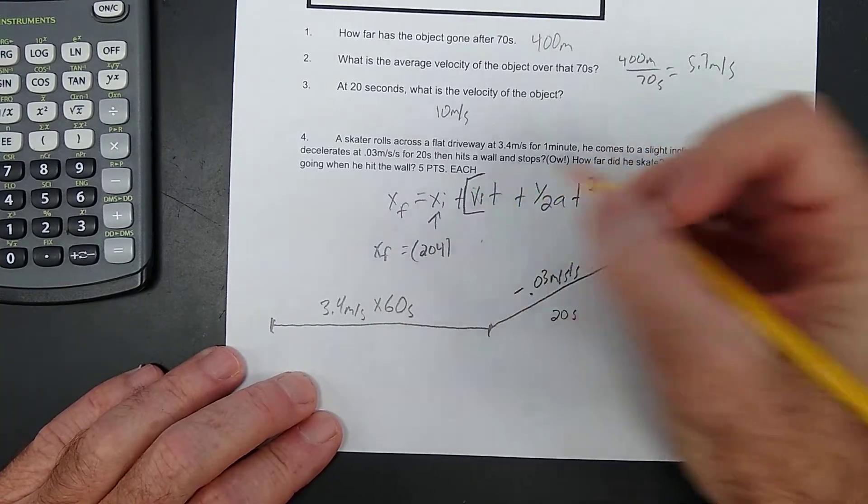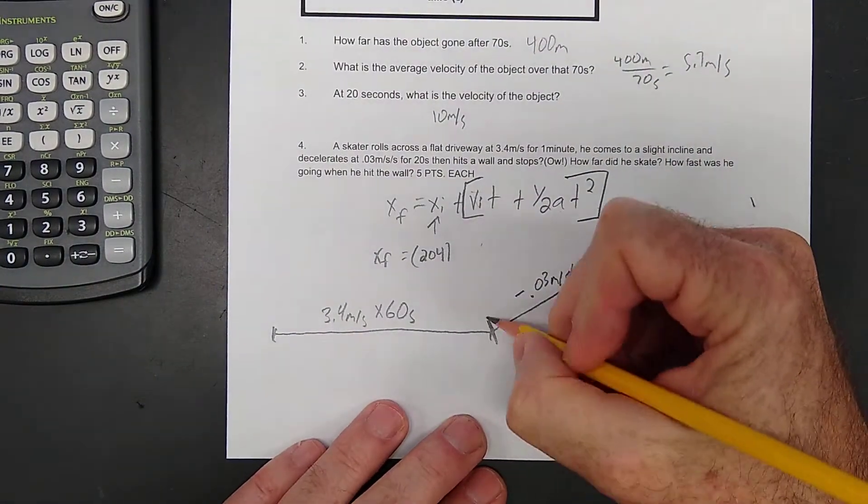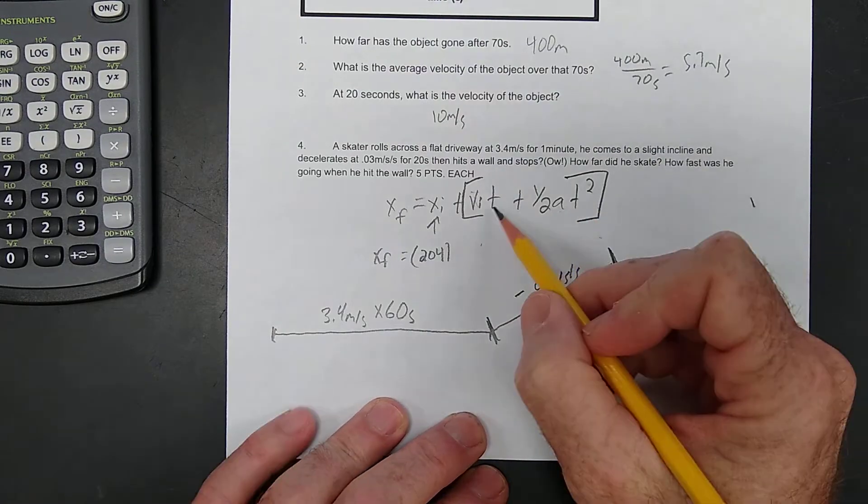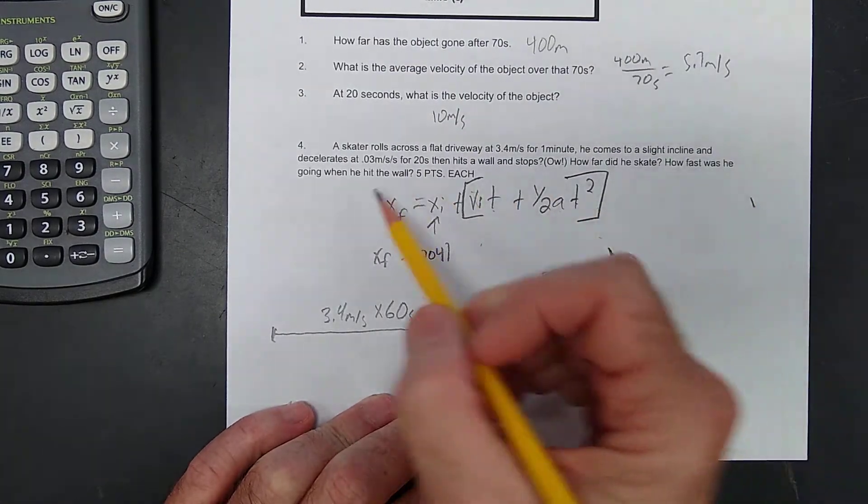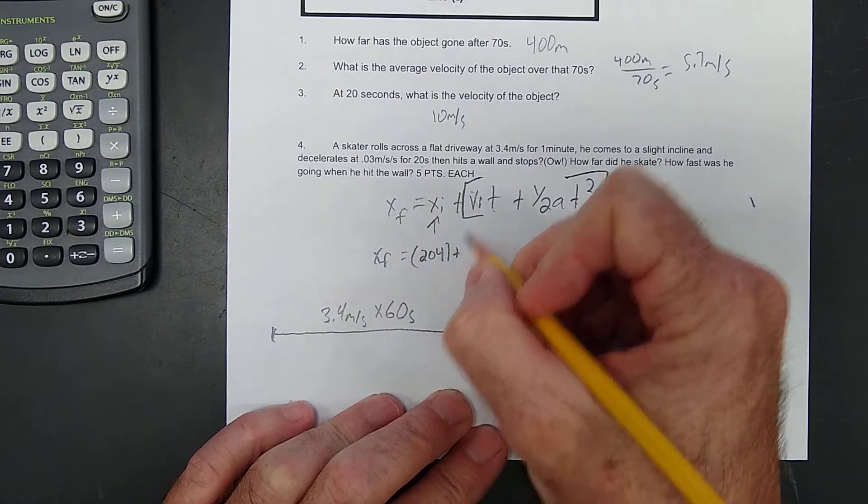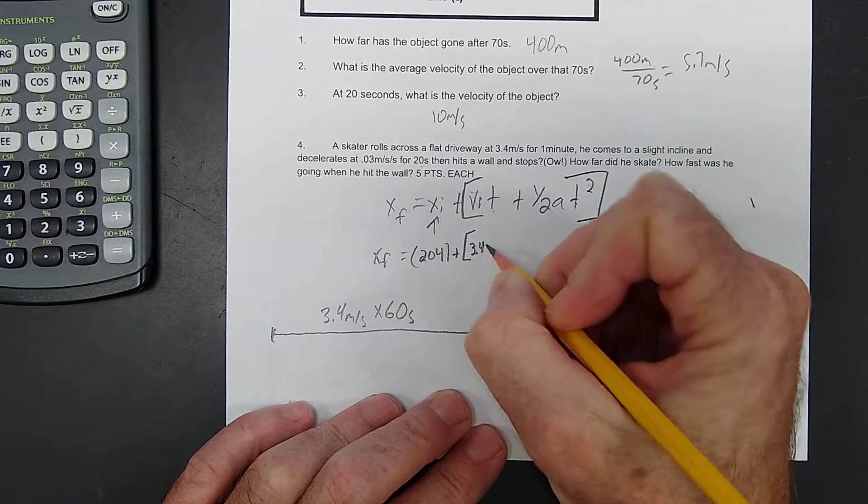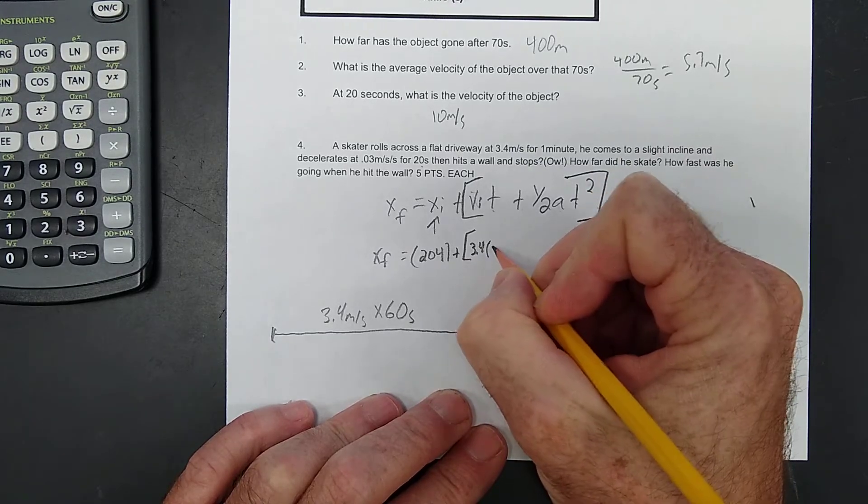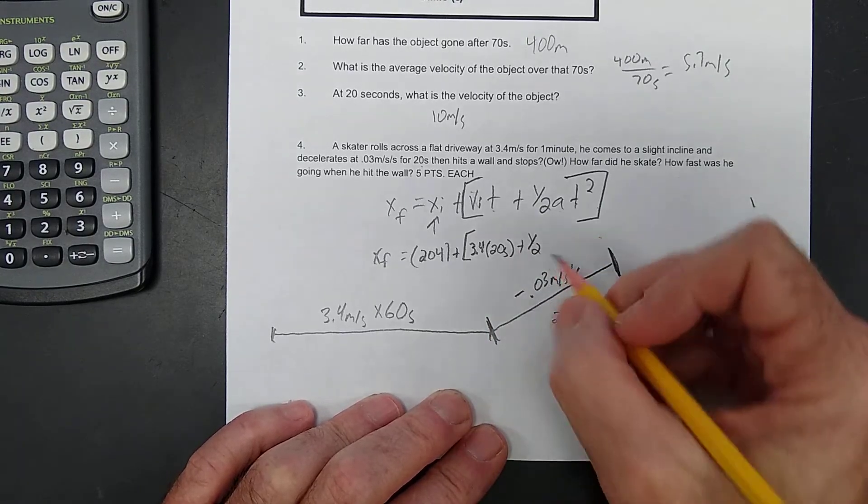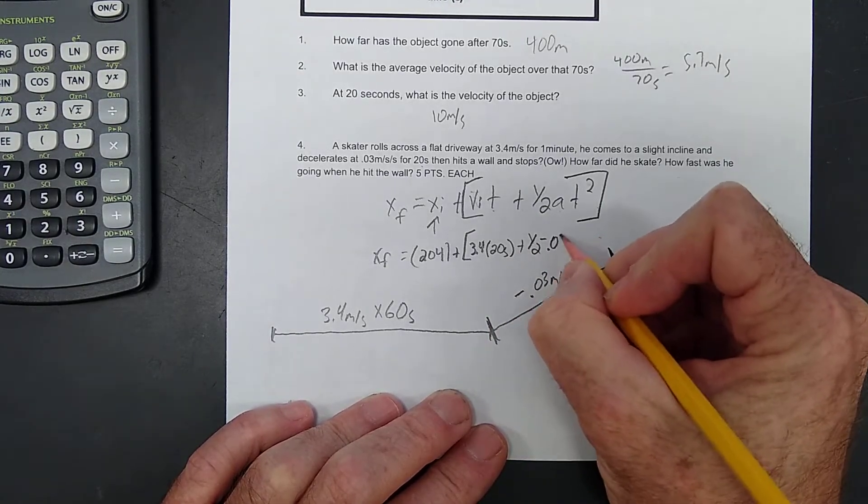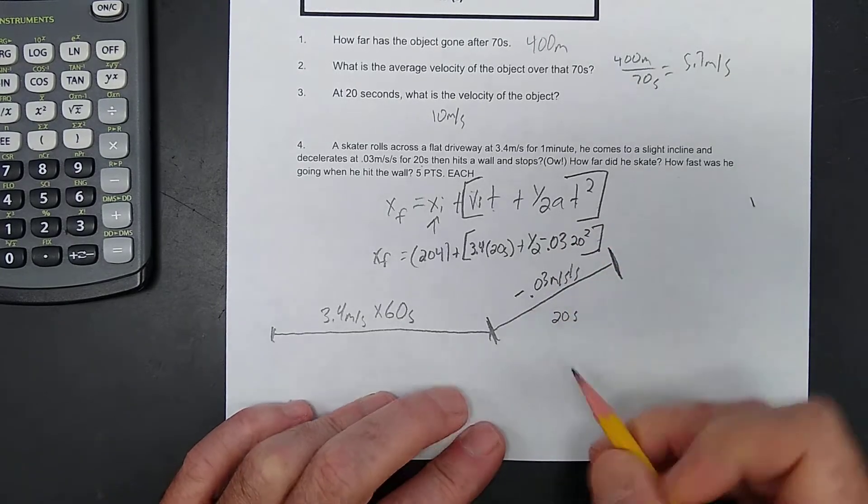Now, remember, this part of the equation, and we've talked about this many times, this part of the equation is about the hill. So, this is the t when we're on the hill here, okay? He's on the hill for 20 seconds. His initial velocity when he gets to the hill is 3.4 meters per second, and he's on the hill for 20 seconds, plus one-half a, that's negative .03 times t squared, that's 20 squared. And there we go.